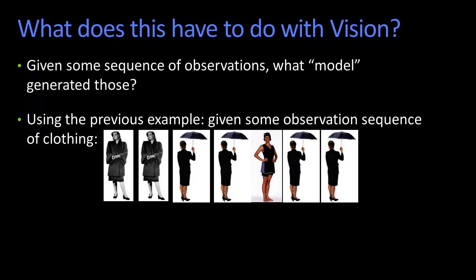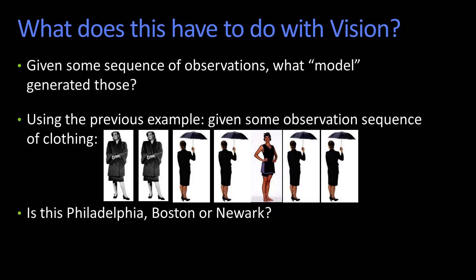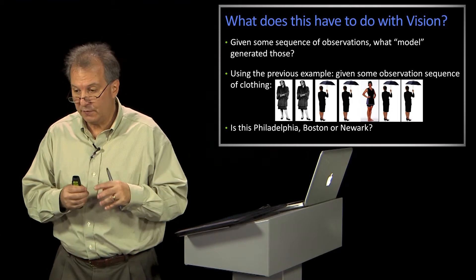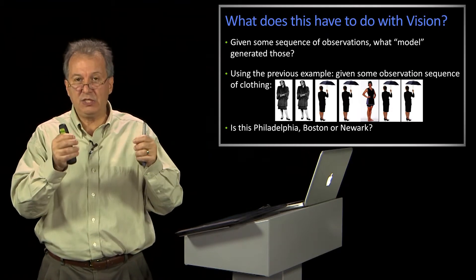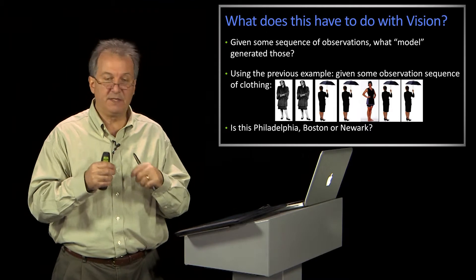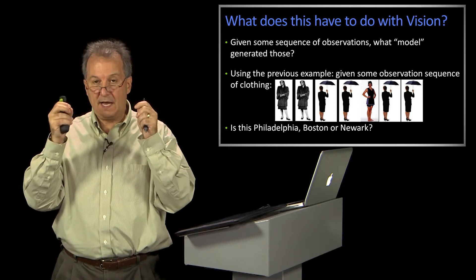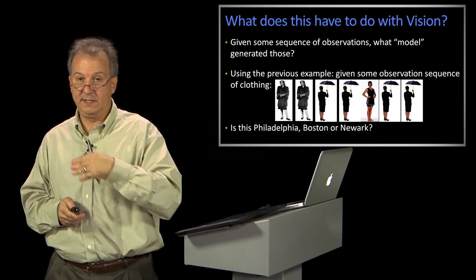Suppose you're seeing some sequence of clothing — you check the clothing that people are wearing each day, and you see coat, coat, whatever. The question you want to ask is: is this Philadelphia, Boston, or Newark? The idea is that you've been collecting sequences of these observations from Philadelphia, a bunch from Boston, a bunch from Newark. You have trained a model that will tend to generate sequences like you see in those cities with the same statistics.